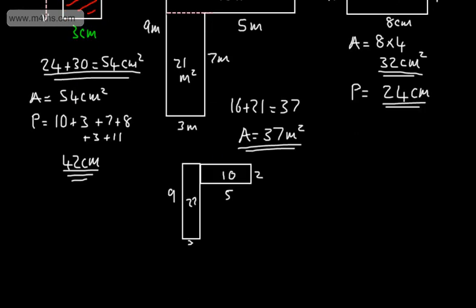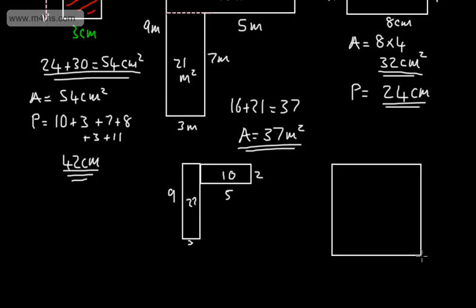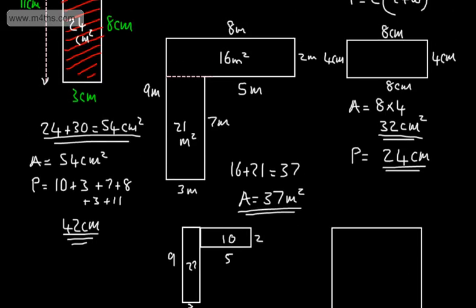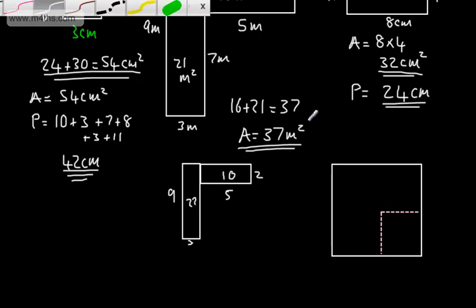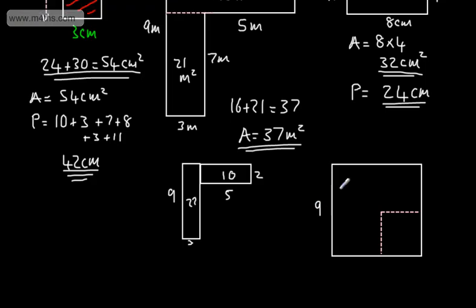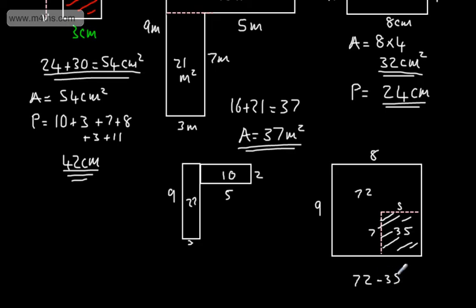Another approach is to treat the whole shape as one big rectangle and subtract the missing piece. The big rectangle is 9 by 8, which is 72. Then we cut away a 5 by 7, which is 35. So 72 minus 35 gives us exactly the same answer: 37 metres squared.